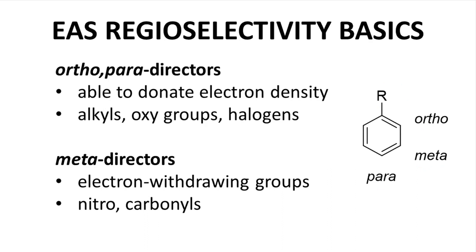If the R group is an ortho-para director, then the new group will prefer to land in the ortho or para position. Ortho-para directors are groups that can donate electron density and include alkyl groups, oxy groups like methoxy, halogens, and some amino groups.